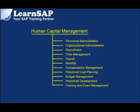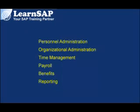The training and event management sub-module deals with event catalog, organizing events and resource planning, management of attendees, correspondence, billing and activity allocation. The travel management sub-module deals with planning of trips, procurement of tickets, requests and approval processes, settlement and posting to financial accounting.